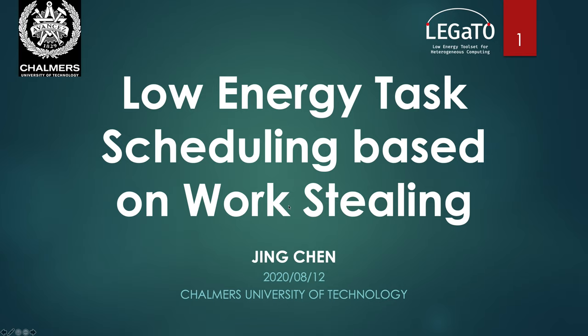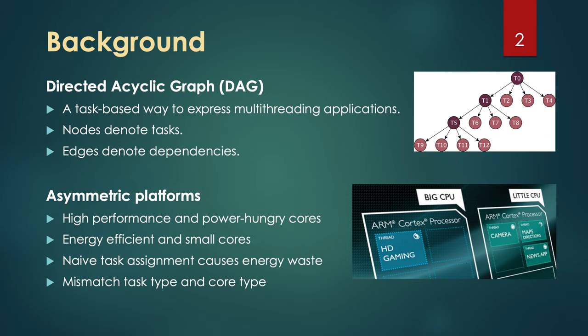Hello everyone, my name is Jing from Chalmers. My presentation topic is low-energy task scheduling based on work stealing. A common way to express a parallel application as a task-based programming model is a directed acyclic graph, in brief DAG, where nodes represent tasks and edges denote dependencies. In order to minimize the total energy consumption during the execution, the problem of task scheduling on multiprocessor systems is to find the proper execution processors for those tasks.